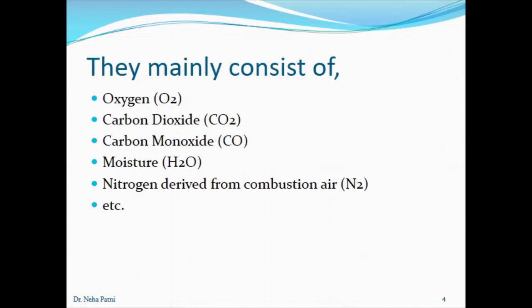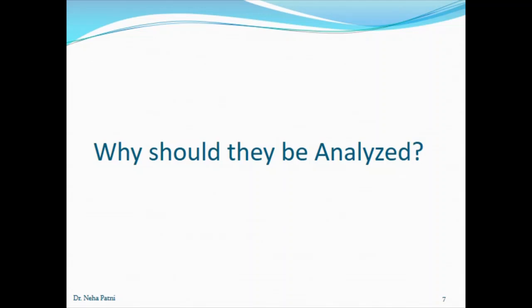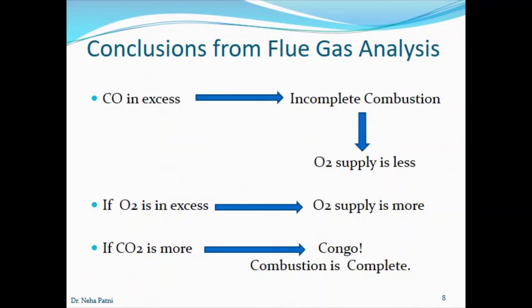These first five we need to estimate using Orsat's apparatus. How do we ensure that the combustion is complete? Obviously by analysing the flue gas. If you have carbon dioxide in excess, that shows that the combustion is complete. But if carbon monoxide is in excess, the combustion is incomplete — that monoxide would have been combusted into dioxide. So the combustion is incomplete, meaning the oxygen supply is less. As soon as we know from flue gas analysis that CO is in excess, we need to increase the supply of oxygen gas.